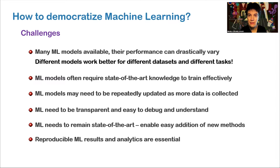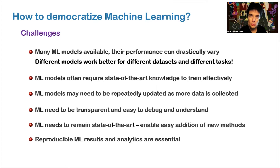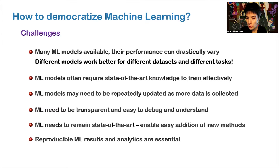Machine learning needs to be transparent, easy to debug, and understandable for various stakeholders. We cannot have only high-accuracy models — they also need to be interpretable and trustworthy. The machine learning community develops new models over time, so how can we create an ecosystem where new models can be used by practitioners in an easy way? Reproducible machine learning results are essential both for publishing in healthcare and for enabling practitioners to use cutting-edge models.